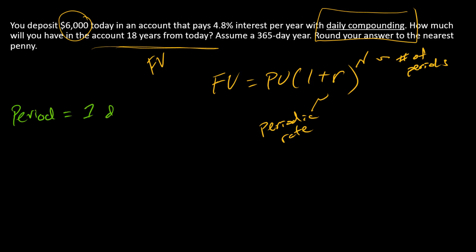So let's do our conversions. The period equals one day, so there's 365 of those per year. Our number of periods is going to equal 18 years times 365, which is equal to 6,570.